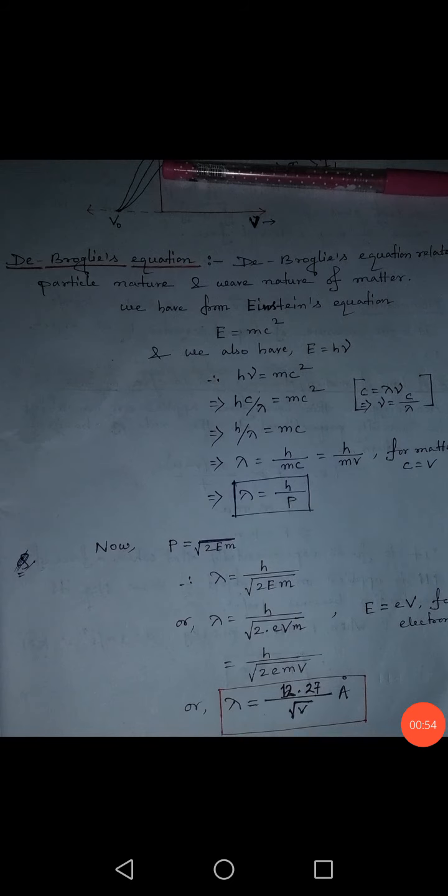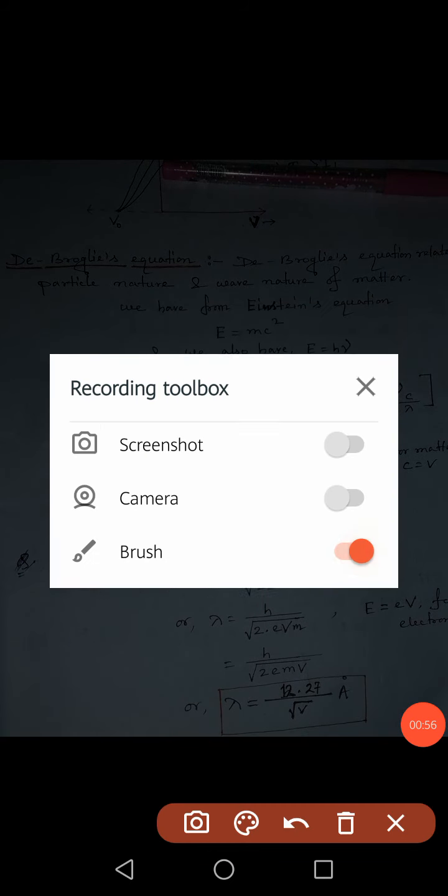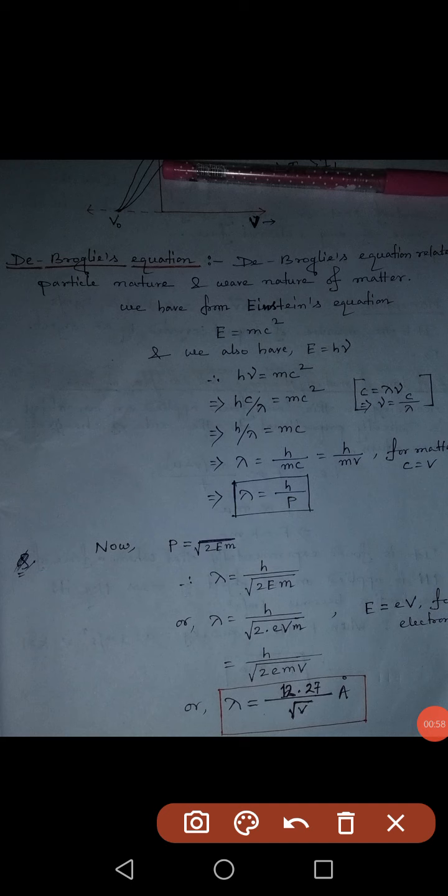To relate wave nature with particle nature, the first equation he used is Einstein's equation: E = mc². Then he took another equation: E = hν. We already know both of these equations. If we equate these two equations, we get mc² = hν, or hν = mc².